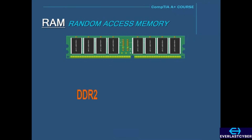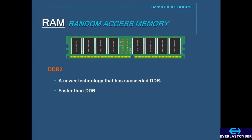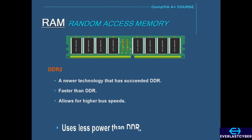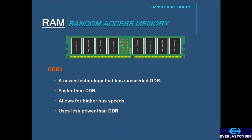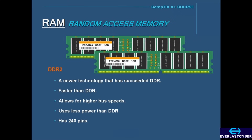A new technology that has succeeded DDR is DDR2. DDR2 is faster than DDR because it allows for higher bus speeds, and it also uses less power than DDR. A DDR2 DIMM has 240 pins compared to 184 pins on DDR. Some examples of DDR2 are PC2-3200 and PC2-4200.